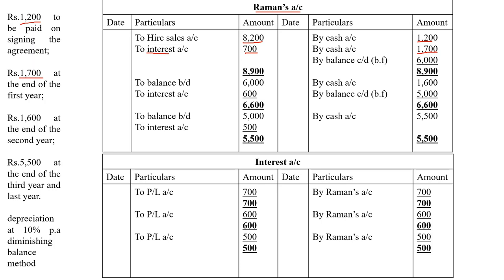Tally the account and bring down the balancing figure to the next year. From the second year onwards, only two entries: interest due ('To interest account' ₹600 on the debit side) and installment received ('By cash account' ₹1,600 on the credit side). Bring down the balance to year 3. Year 3: 'To interest account' ₹500 and 'By cash account' ₹5,500. The account should get fully tallied at the end of the last installment when there is no default.